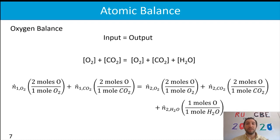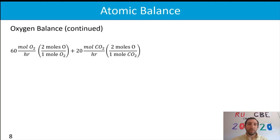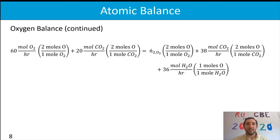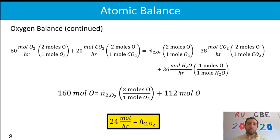We continue the oxygen balance, substituting in all known values for both the left- and right-hand sides. We find 160 moles of oxygen on the input side. On the output side, there's an unknown amount of O₂ in stream two plus 112 moles of oxygen contributed from carbon dioxide and water. Rearranging, we find there are 24 moles per hour of oxygen exiting in stream two.